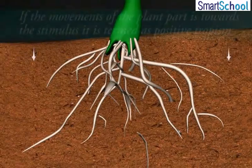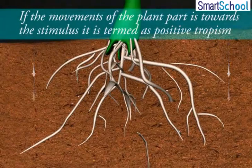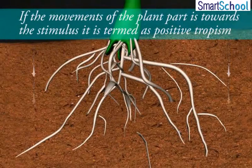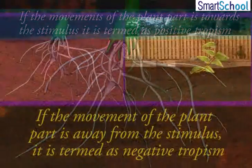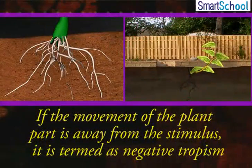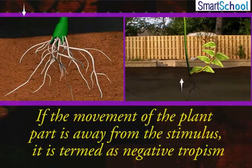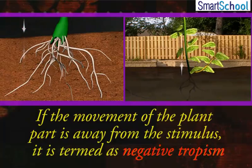If the movement of the plant's part is towards the stimulus, it is termed as positive tropism. If the movement of the plant's part is away from the stimulus, it is termed as negative tropism.